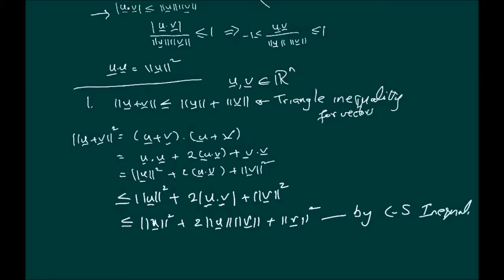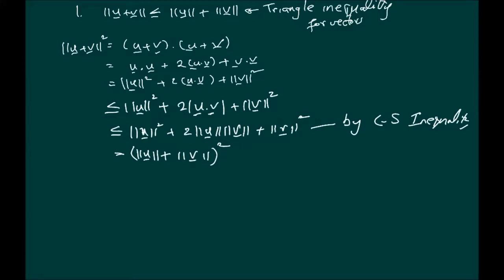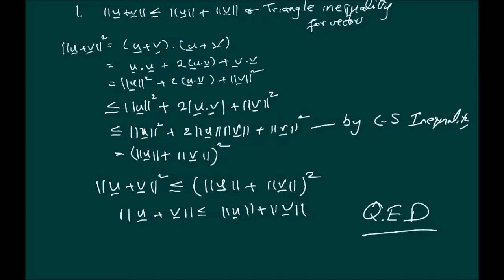This is the same as (norm of u plus norm of v) all squared. So essentially, norm of u plus v squared is less than or equal to (norm of u plus norm of v) squared. Taking the square root of both sides gives us the triangle inequality we wanted to prove. QED.